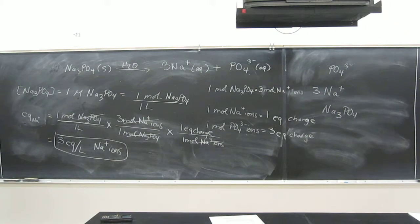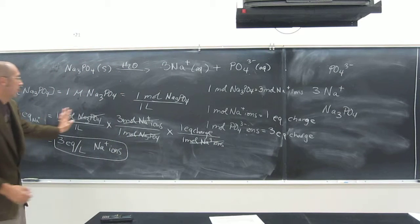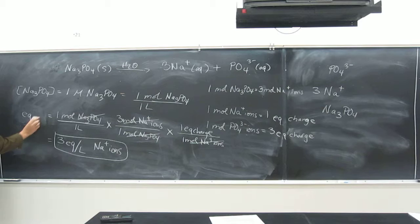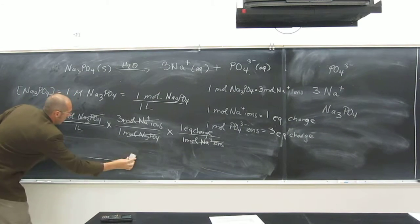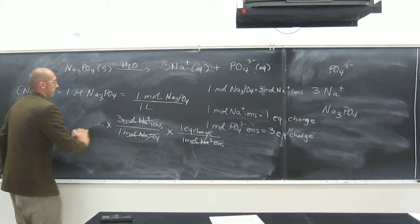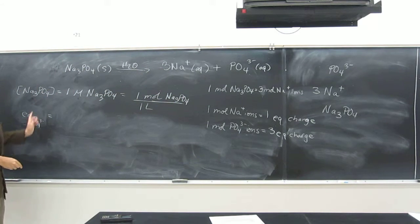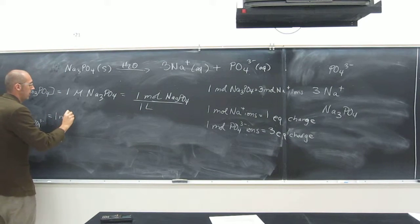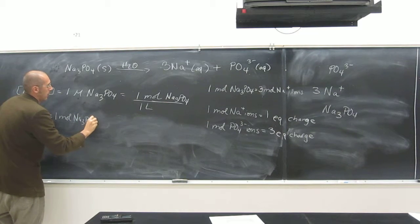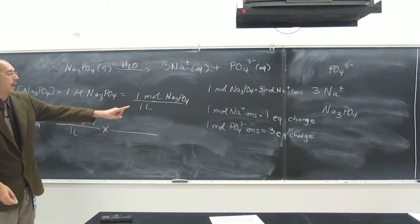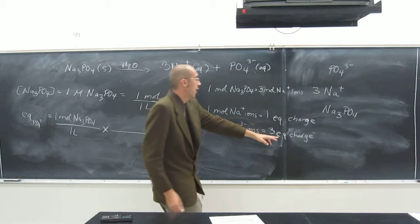Should we do it for phosphate ions too? Yeah, it's the same thing. I'm going to erase what we've done here — you can watch the video again. So instead of equivalents of sodium, we're going to do equivalents of phosphate. We start with that same concentration — one mole of sodium phosphate per liter of solution — and multiply by the conversion factor: one mole of Na₃PO₄ equals one mole of PO₄³⁻ ions.